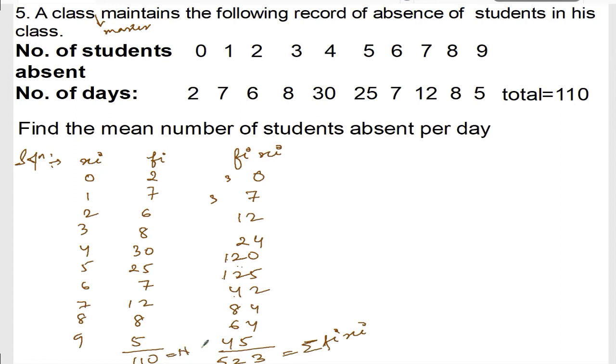Therefore, mean is equal to summation of fi xi divided by n. That's 523 divided by 110.